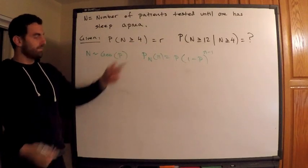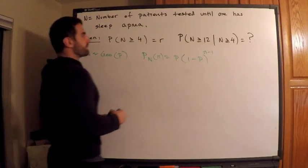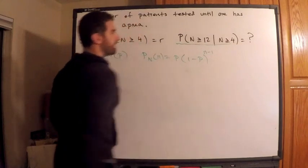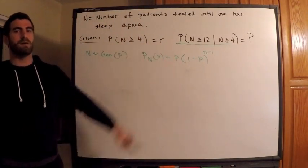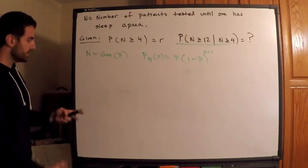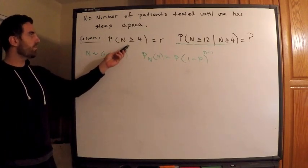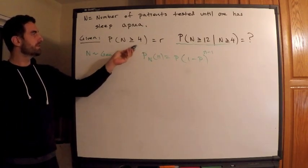First thing I want to do is use this information here, this was given, and then we want to find this, and this is what we're after, right there. So that's a conditional probability. So I want to use the memoryless property of geometric distribution.